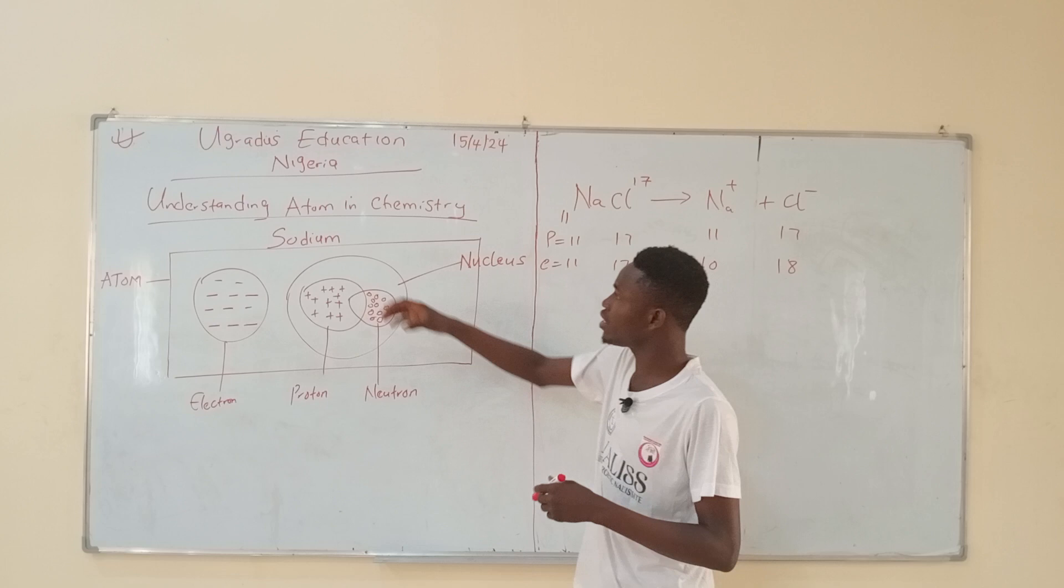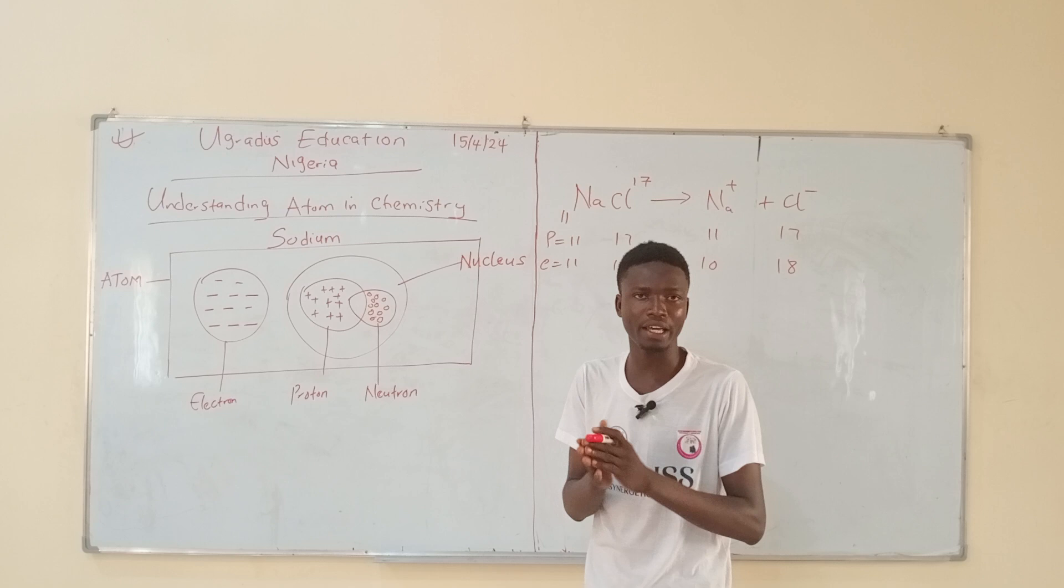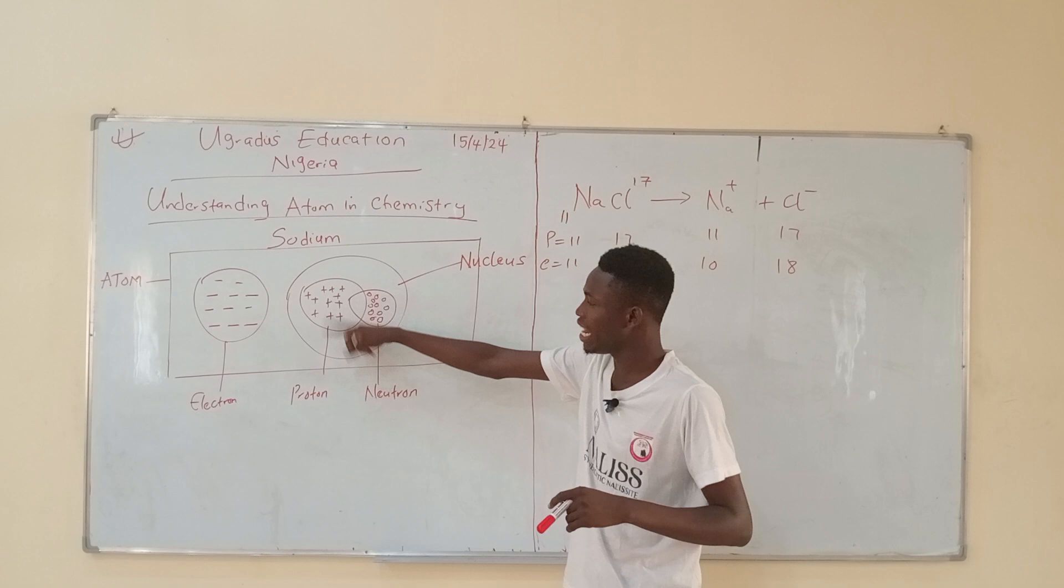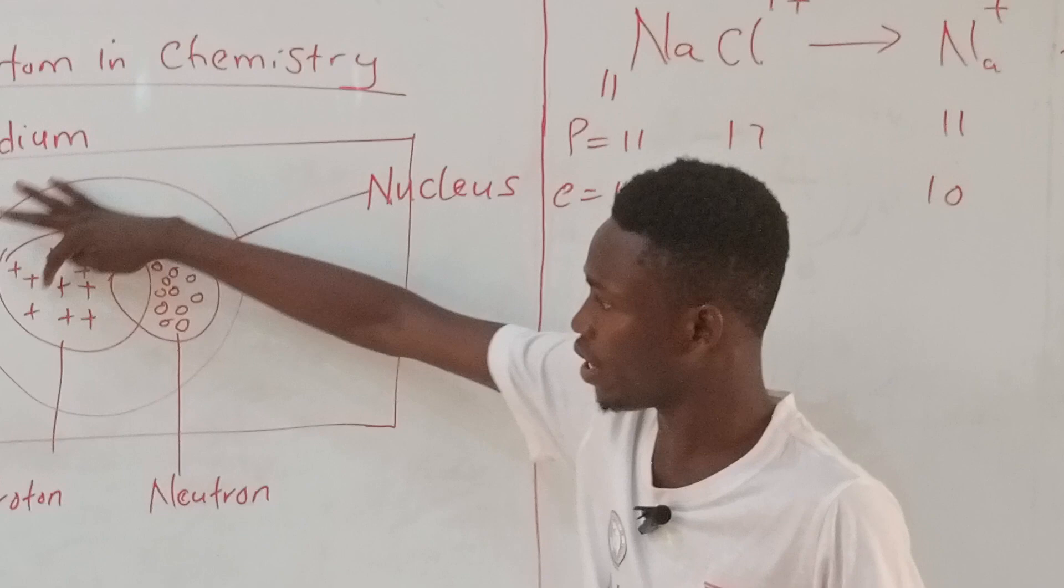The nucleus is like another sphere inside the atom that includes proton and neutron. If this is sodium atom, we all know that sodium has atomic number 11. Atomic number in chemistry also means proton number. That means at neutral state, sodium must contain 11 protons. If you can count this very well, you will see that it's 11.